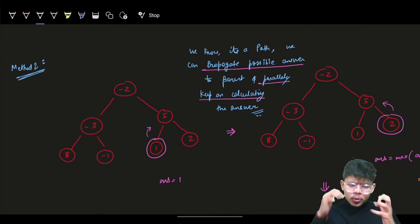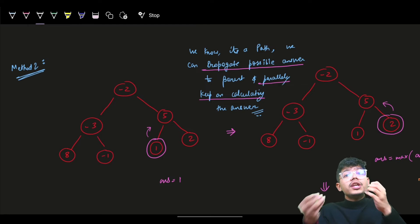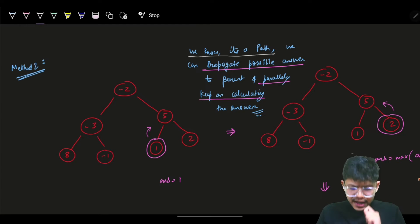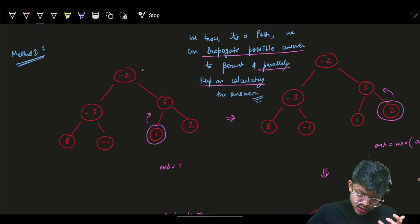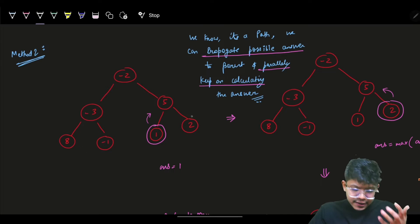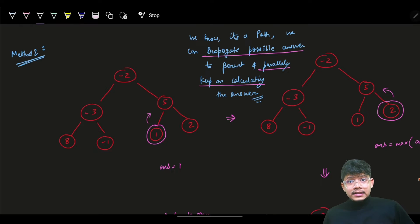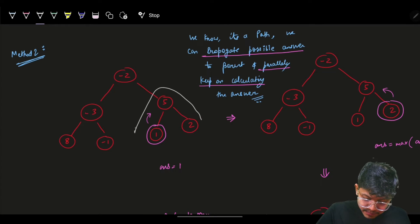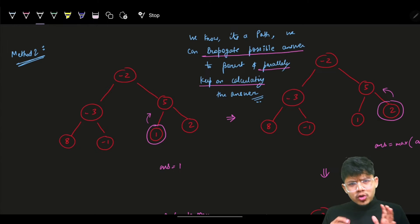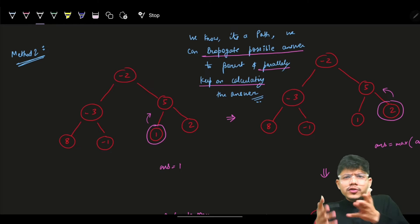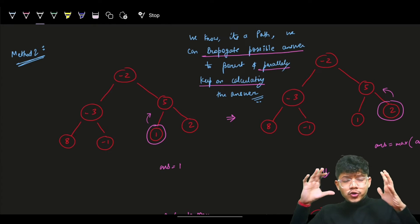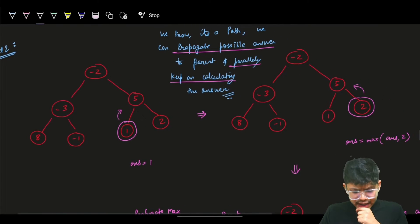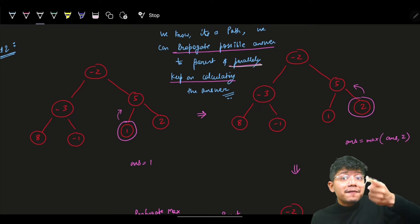To optimize, we want to reuse computed values. If we're standing at node 5, we don't know whether our path goes left or right, but we can store and propagate values for use later. The idea is: at every node, parallelly propagate path values upward AND find the maximum path considering that node as the root of the path.